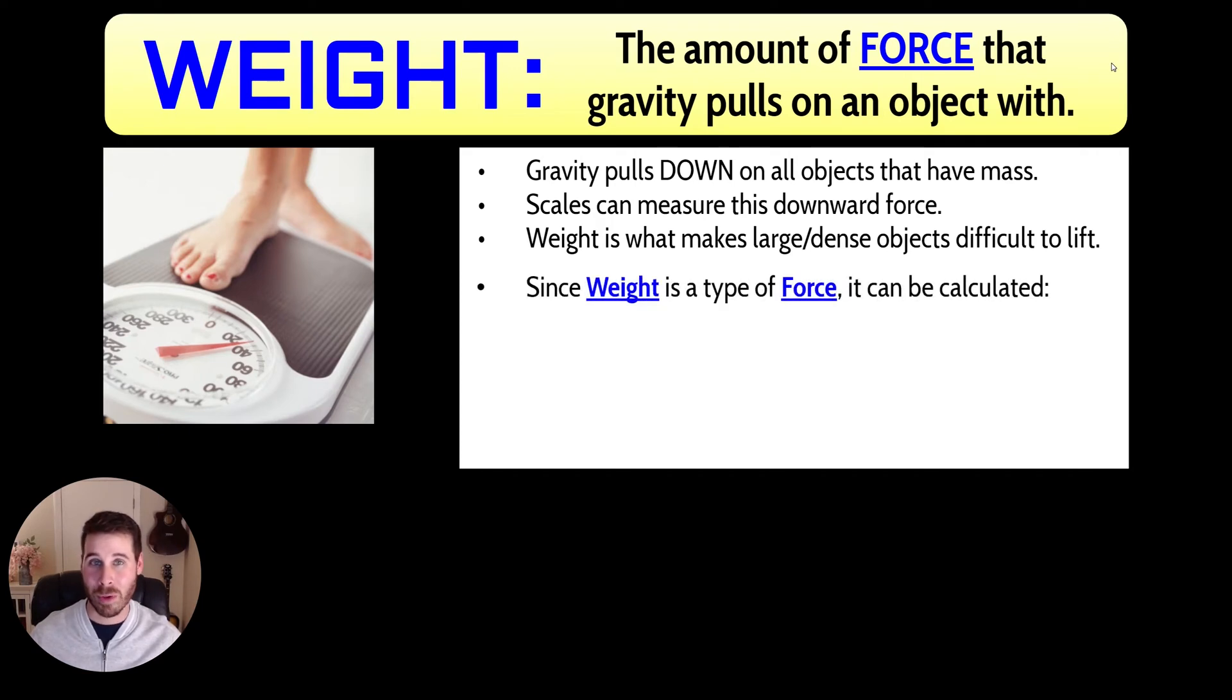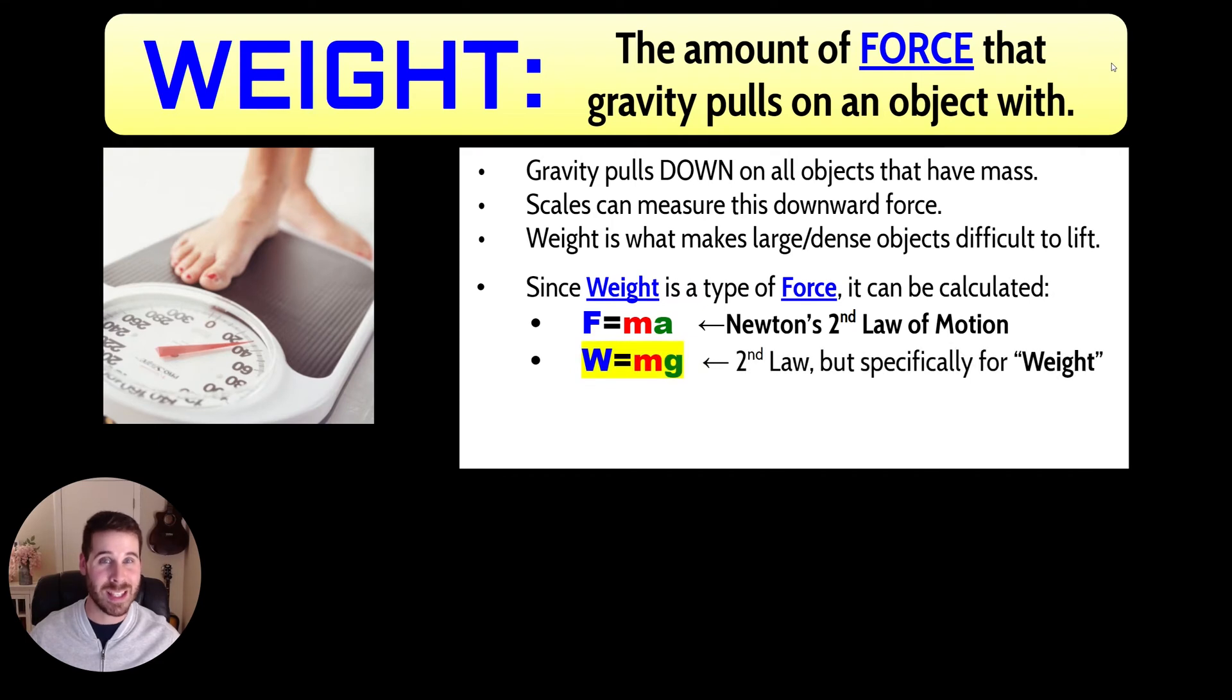Now, since weight is a type of force, it can be calculated. We can figure out exactly how much weight something has. So there's a formula for it. The formula that we would use is known as Newton's second law of motion. And it states that any force that's being applied to an object must be equal to its mass multiplied by the acceleration that it's experiencing due to something that's causing it to accelerate in this case, gravity. So that's Newton's second law of motion, which can be applied to so many different scenarios.